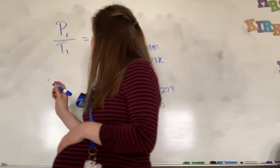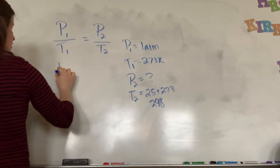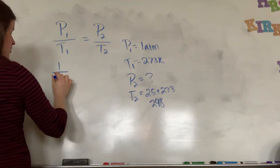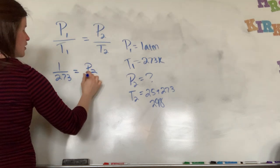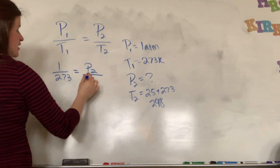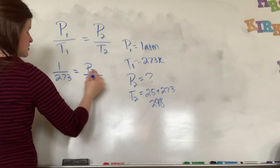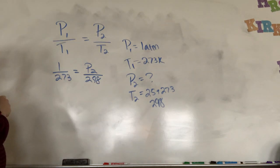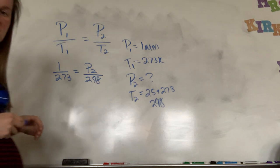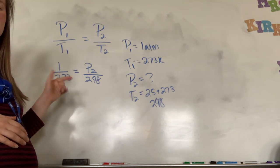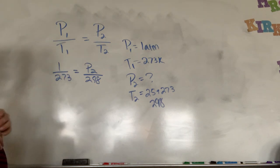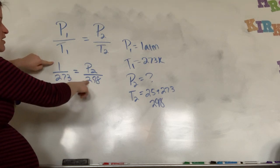So I'm going to plug in. So my P1 is 1 and then my T1 is 273, and then my P2 is what I'm solving for and then my T2 is 298 again because we have to be in Kelvin. So then you need to solve for the unknown. It's easiest just to cross multiply and divide by the third number. So you're going to multiply the numbers across and then divide by this guy.